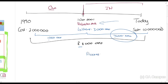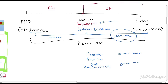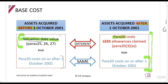So why does this make a difference? Proceeds will be 10 million. How will we calculate the base cost? You can't say the cost of the asset is 2 million — then it will work out to 8 million, which is wrong. You have to say the valuation date value of 3 million, so that it works out to a 7 million capital gain. That is why we start with the valuation date value.